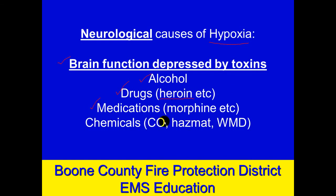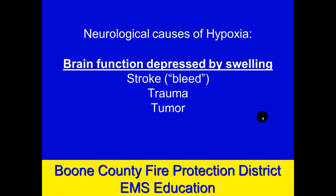It could be medications given for treatment — morphine comes to mind, and morphine and heroin are cousins. It could also be chemicals: the carbon monoxide we talked about earlier doesn't just occupy red blood cells — it also directly depresses brain function. It could be some other chemical from a hazardous material incident or a terrorist-type weapon.